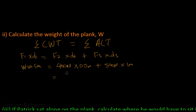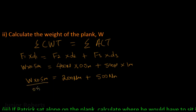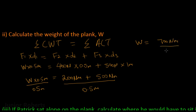Simplifying: 400 × 0.5 = 200 N·m, and 500 × 1 = 500 N·m, giving W × 0.5 = 200 + 500 = 700 N·m. Dividing both sides by 0.5 m, we get W = 700 ÷ 0.5 = 1400 N. So the weight of the plank is 1400 newtons.